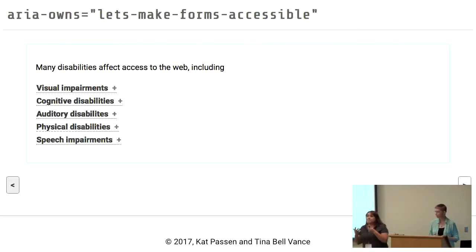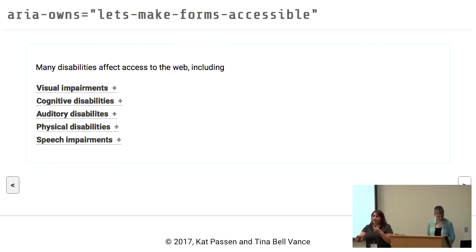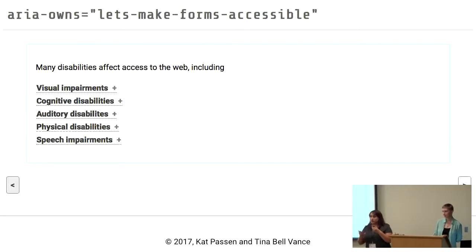Physical disabilities: people that have cerebral palsy, people that have Parkinson's disease — things that make using a hand mouse difficult. It's very difficult to navigate when you can't keep your hand still to smoothly move a mouse. People with speech impairments — how many people use Alexa, Siri, Cortana? If you have a speech impairment, it makes using that technology somewhat difficult.